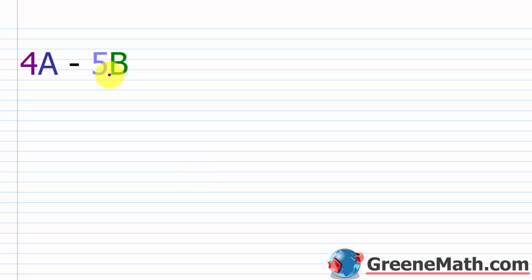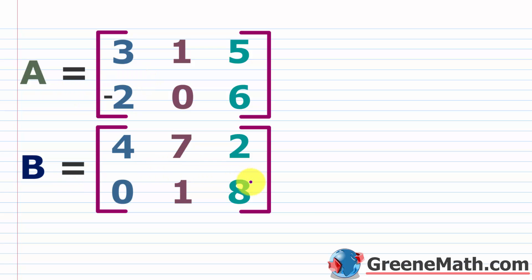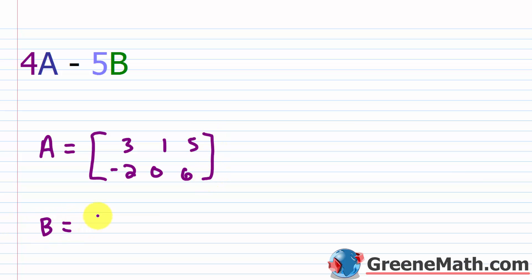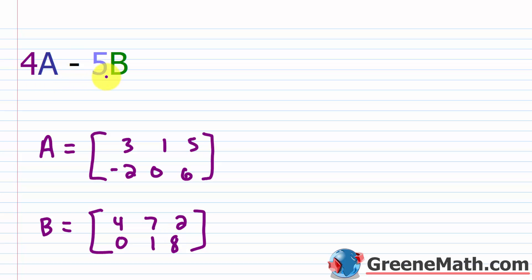Now let's do four A minus five B using the same two matrices. A suggestion when you have subtraction: add the opposite — write it as four A plus negative five B. This helps avoid sign mistakes, because if you go through all this work and get the wrong answer, you basically have to start over.